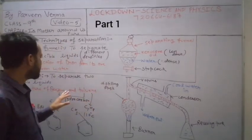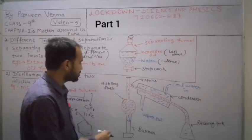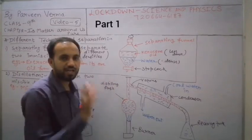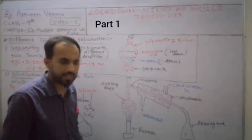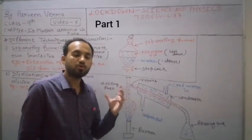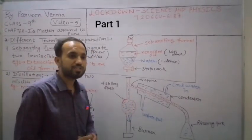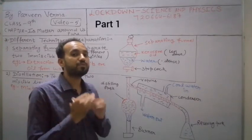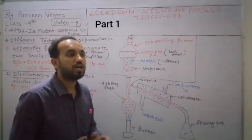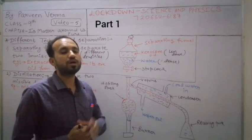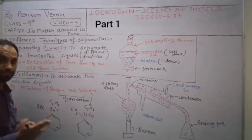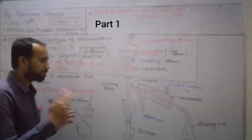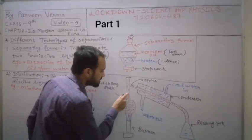The distillation process works on this phenomenon. When we mix benzene and toluene together and heat them, benzene will vaporize first because its boiling point is lower. When benzene vaporizes, it starts to form vapors. These vapors then go through a glass pipe into a condenser.